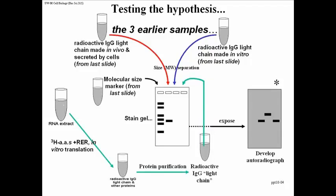And this is what was found. The spot on the left represents material running in the second lane, which is that small amount of radioactive IgG that the cells actually made and secreted. The third lane contained the IgG light chain made by incorporating radioactive amino acids in a cell-free protein synthesizing system using RNA from these cultured cells. And finally, in the last lane, cell-free translation of RNAs extracted from cells in the presence of rough endoplasmic reticulum produces a protein of the correct or normal size — the mature IgG light chain molecule, the same size as the one secreted by the cell.